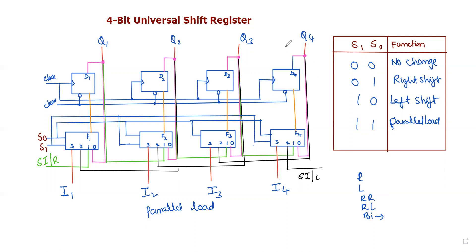More than two operations are controlled using control inputs. There are only two possibilities in binary — zero and one combinations. With two control inputs we can perform four operations, since two to the power of two equals four combinations of selection inputs. For four combinations of selection inputs, we will choose a multiplexer.